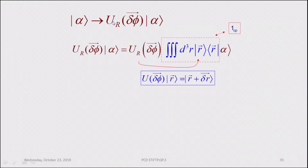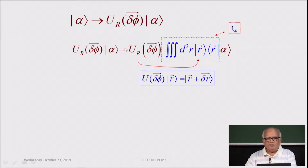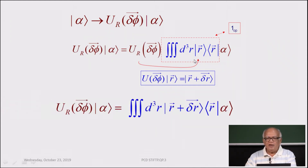Let U be a rotation operator through an infinitesimal angle delta φ, represented as a vector (since infinitesimal angles, but not finite angles, can be represented as vectors). This operator gives you a new state when it operates on a state vector |α⟩. We insert a unit operator — which we can always do — as a resolution of unity, and we see that this rotation operator will turn the coordinate r to r plus delta r.